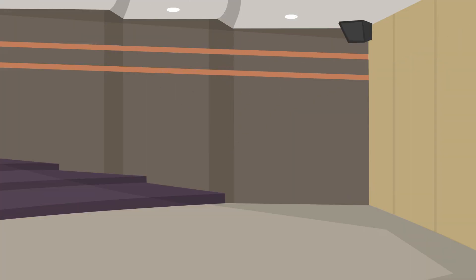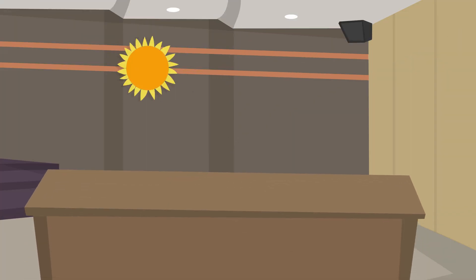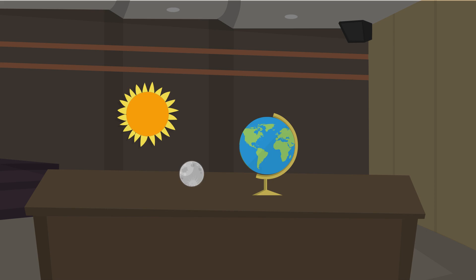For today's activity, we have a classroom model with representations of the Sun, Earth, and the Moon. This model will help us visualize and understand the movements that result in day and night.